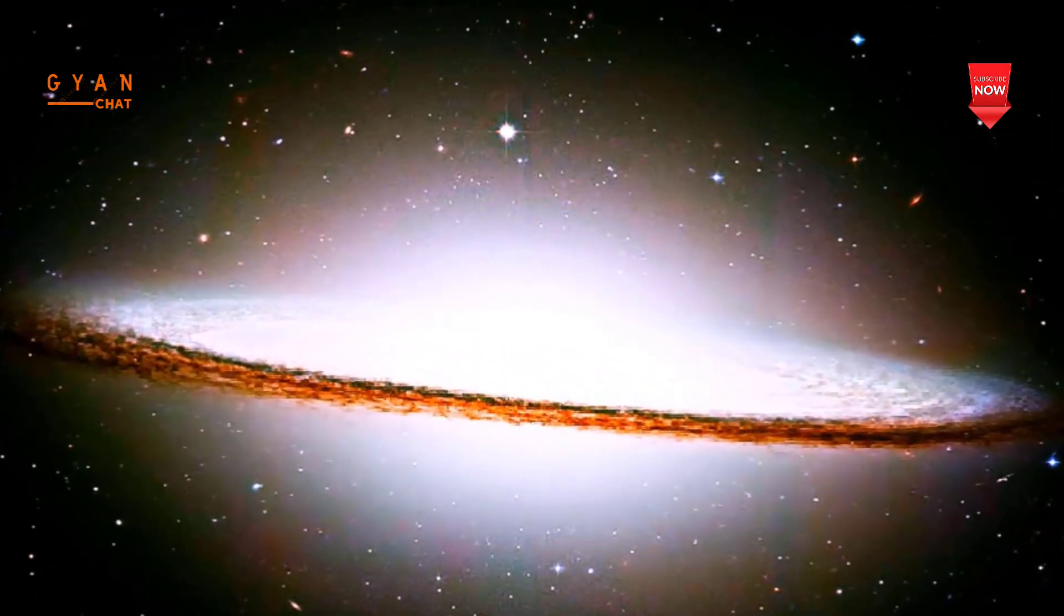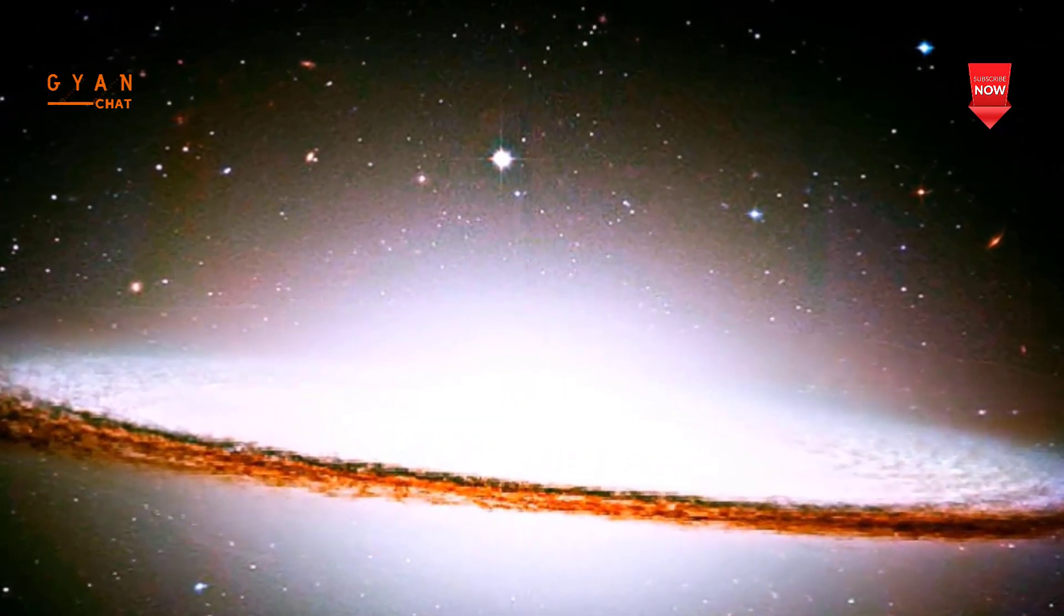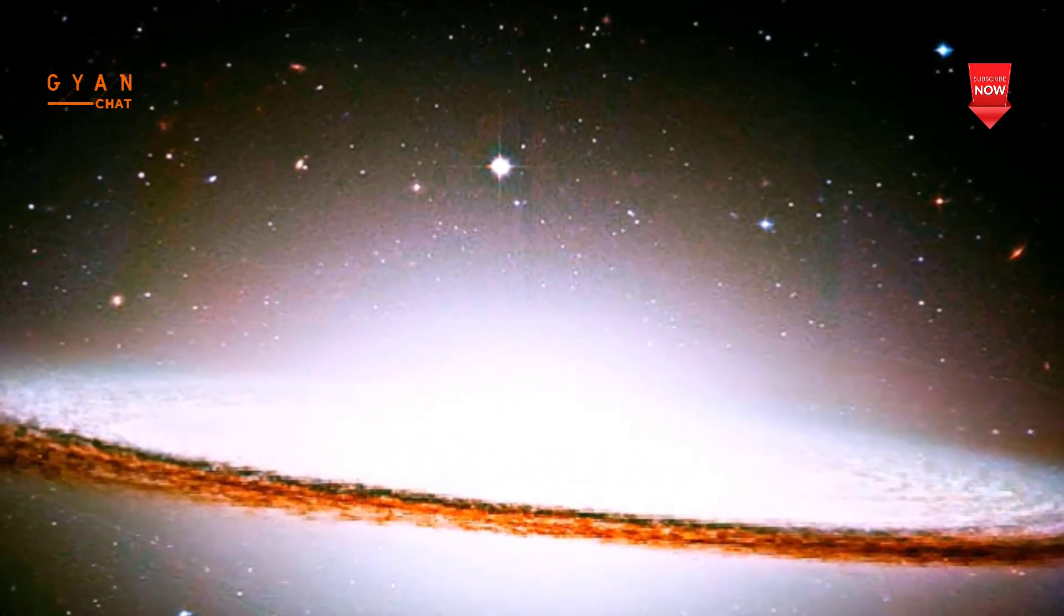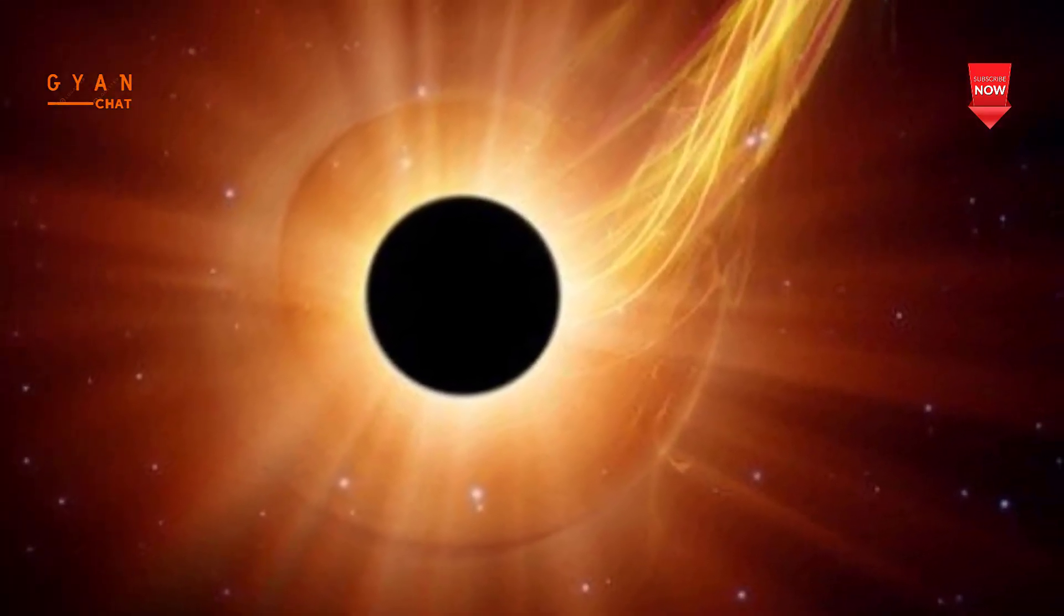The supermassive black hole at the center of the Milky Way galaxy is called Sagittarius A. It has a mass equal to about 4 million suns and would fit inside a very large ball that could hold a few million Earths.